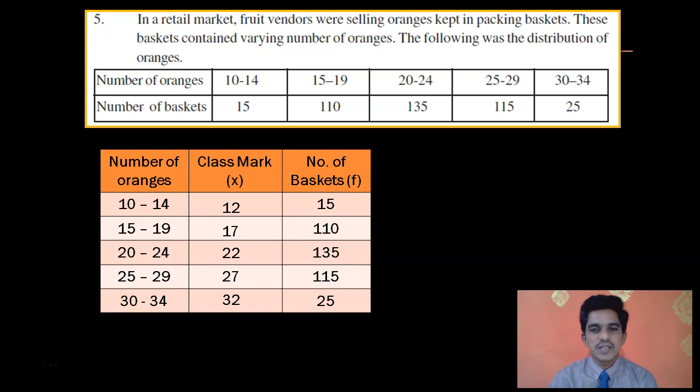Now, here comes an important thing. That is, you have to calculate deviations. Before calculating deviations, we have to identify the assumed mean. The highest frequency is 135. Then, the class mark corresponding to the highest frequency is the assumed mean. So, here A is 22. You could also take 17 or 27 as A and the problem will still work. Finally, you will get the same answer.